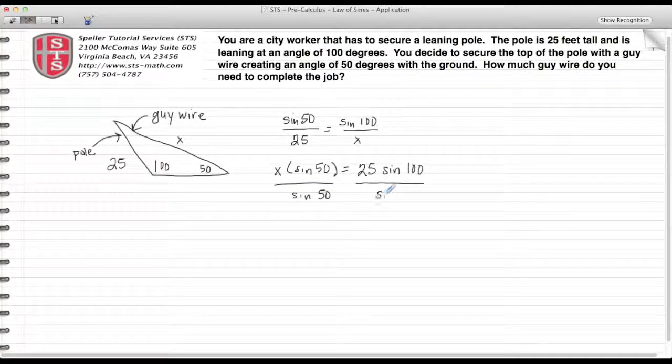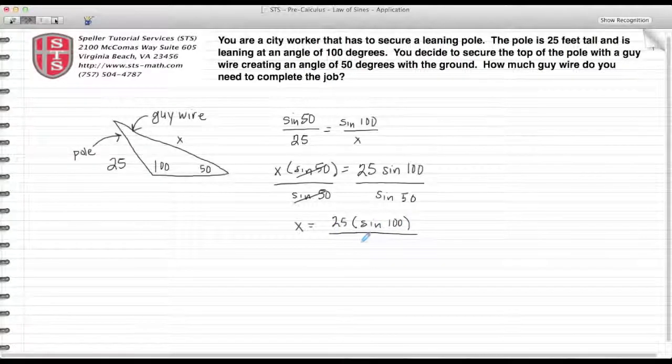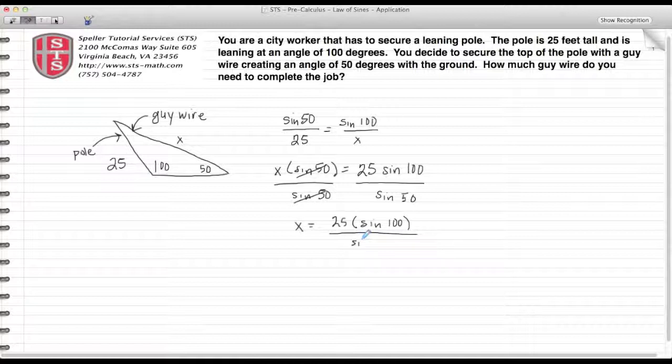Trying to solve for X, so I need to isolate X by dividing both sides by the sine of 50. Doing so, the sine of 50 over the sine of 50 evaluates down to 1, and I'm left with X is equal to 25 times the sine of 100 divided by the sine of 50.